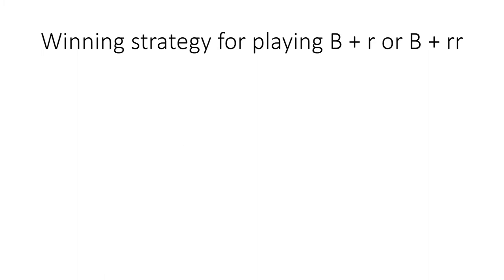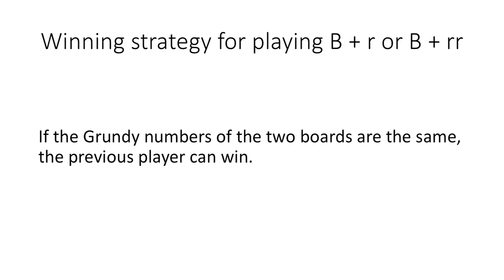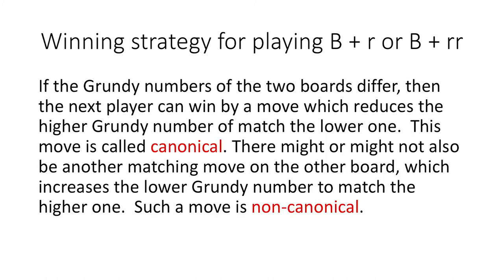The winning strategy for playing bishop plus baby rooks is to match their Grundy numbers. If the Grundy numbers of the two boards are the same, the previous player can win. If not, then the next player can win. His canonical winning move is on the board with the higher Grundy number, which he can play to another location which matches the lower Grundy number.